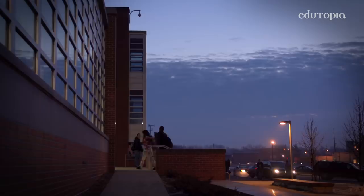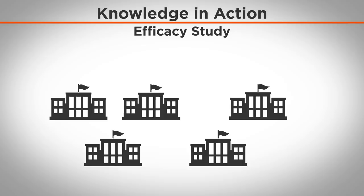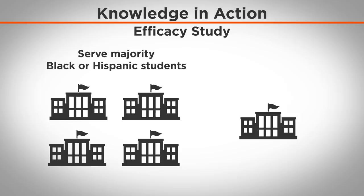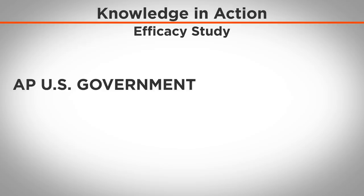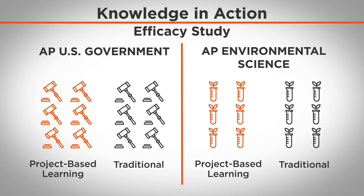We ended up partnering with five of the largest predominantly urban districts around the country. Three of the districts served a majority of students from low-income households, and four of the five districts served a majority of students who were Black or Hispanic, who have been traditionally underserved. We were working with both AP U.S. Government teachers and AP Environmental Science teachers. We randomly assigned teachers to either have access to Knowledge in Action — that was our treatment group — or traditional AP classes, which was the control group.